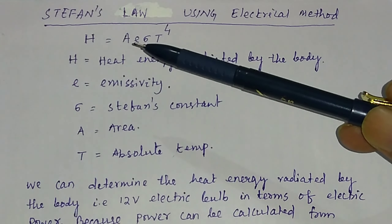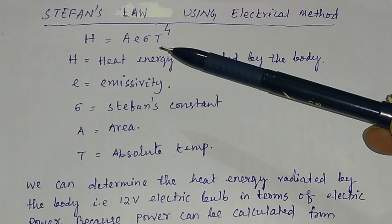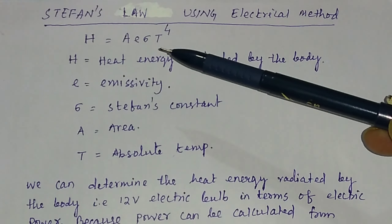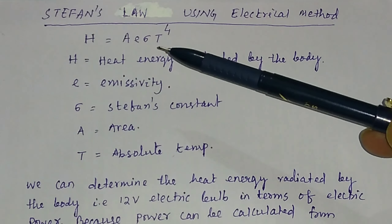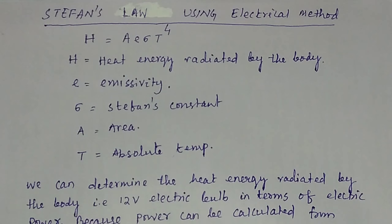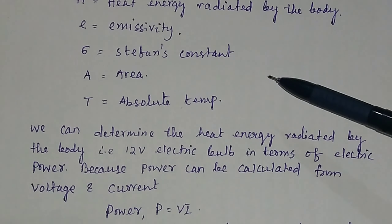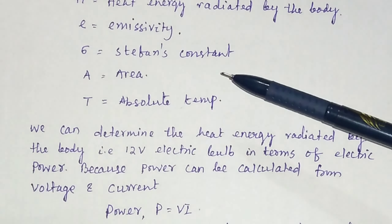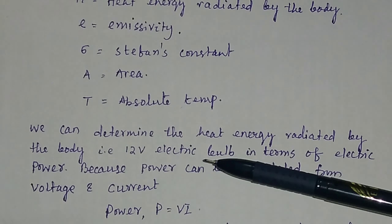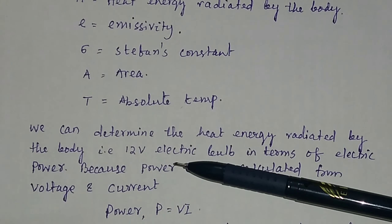In this video, I will show you how to verify Stefan's law using electrical method. In this experiment, you have a voltage source of 12 volt, 0 to 12 volt. That means you can change the voltage or increase the voltage from 0 to 12 volt. This is your voltage source, and you have a voltmeter which is connected in parallel to the circuit.